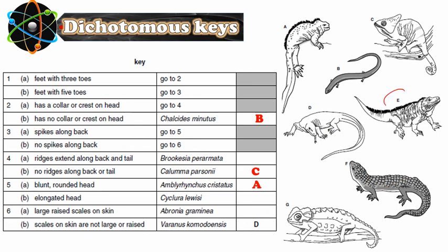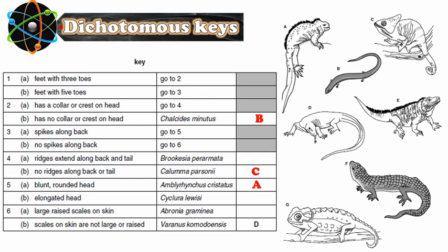Let's go to animal E. Feet with three toes: one, two, three, four, five — so feet with five toes. Go to question three: spikes along the back? Yes, it has spikes along the back. Go to question five: blonde rounded head? No, the head is elongated. So the name of this animal is Cyclura lewisi. We write E here — animal number E is identified.